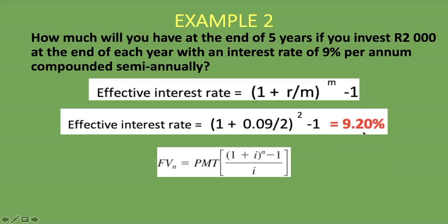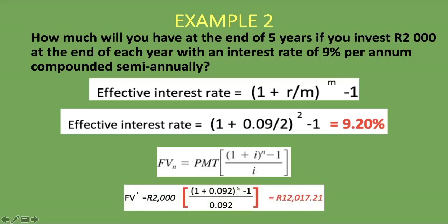The formula gives us: FVN = 2,000 × [(1 + 0.092)^5 − 1] ÷ 0.092 = R12,017.21. For the sanity check: 5 years × R2,000 = R10,000, and our answer of R12,017.21 is greater than R10,000, so we know it's likely correct. If it were lower than R10,000, we would know we had made a mistake somewhere.